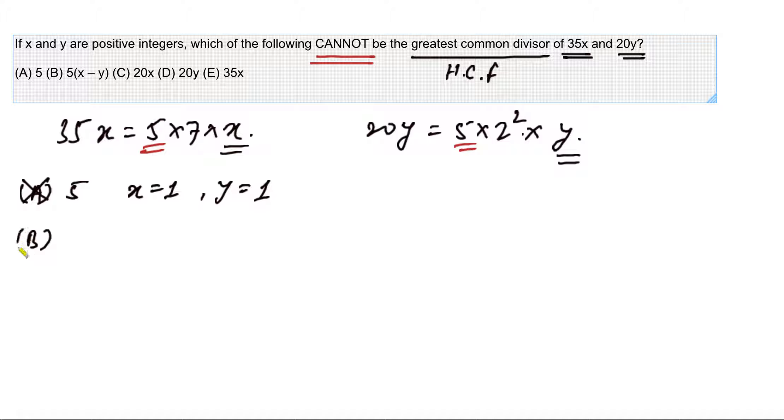Now we go to the second option, which is 5 times x minus y. When we look at this option, our curiosity should be: can we make x minus y somehow 1? If that's possible, then 5 may be the highest common factor because in the previous option we already checked that 5 can be the highest common factor. In order to make x minus y equal to 1, we want x and y to be two consecutive numbers. So the first thought may start with x equal to 2 and y equal to 1.